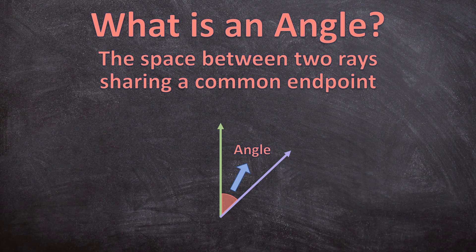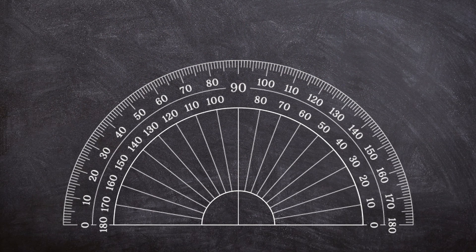Before we start with our first angle, let's set a basic framework for all our angles. On this protractor, we can draw a horizontal line and we are going to draw a vertical line. You can clearly see that this protractor has two different sets of numbers — the first set goes on the outside and the second set goes on the inside.